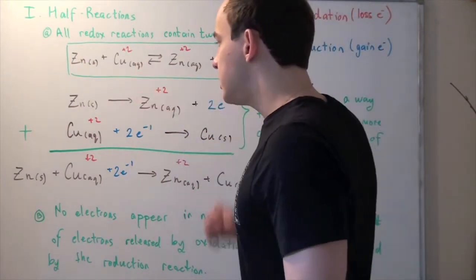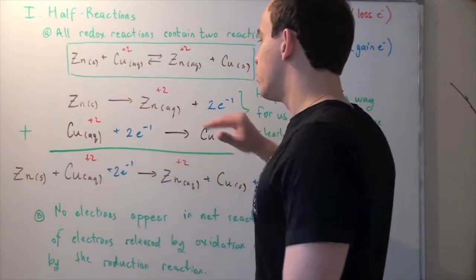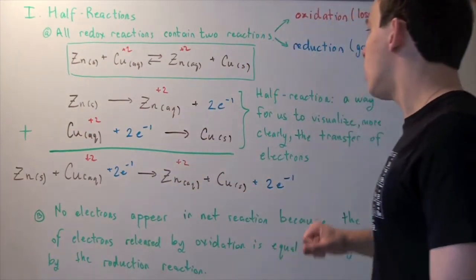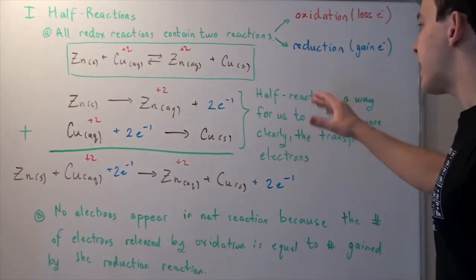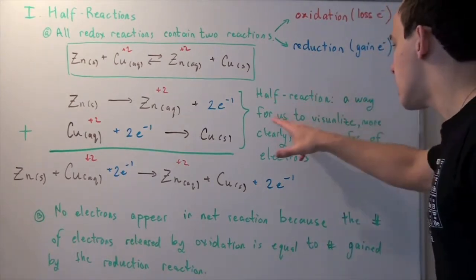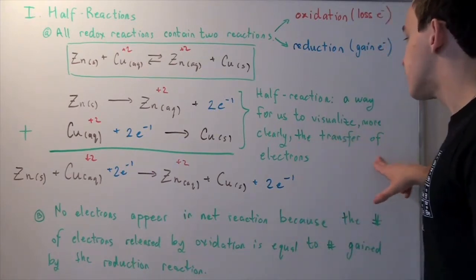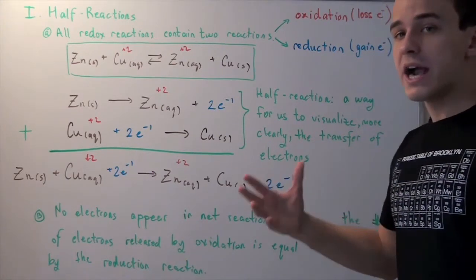So this is our oxidation and this is our reduction reaction. Now these two reactions are each called the half-reaction, and the half-reaction is simply a way for us to visualize more clearly the transfer of electrons from one atom to another.